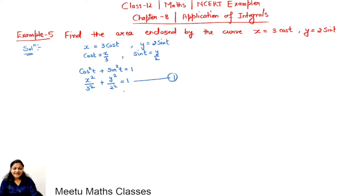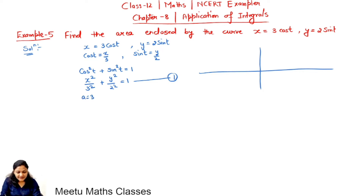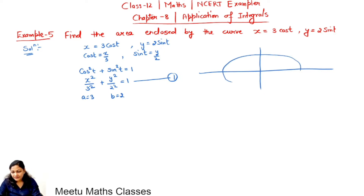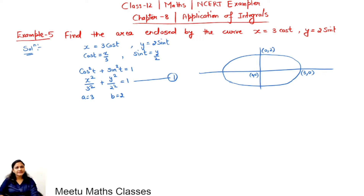This curve represents an ellipse with semi-major axis 3 units and semi-minor axis 2 units. So this is a horizontal ellipse centered at the origin, with semi-major axis 3 units and semi-minor axis 2 units. The equation is x²/3² + y²/2² = 1.